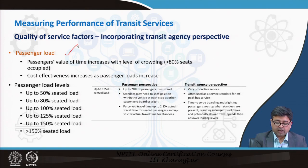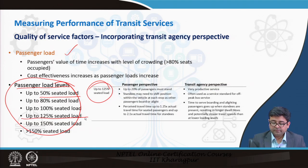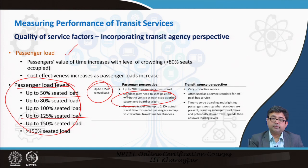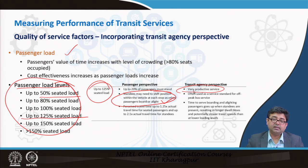Each of these services can be divided into levels. For passenger load, for example, up to 125 percent of the seats loaded means standees may need to shift position within the vehicle at each stop as other passengers board or alight. When the bus is running at over 100 percent occupancy — say 125 percent — people are not only standing but also having to shift positions as people move in and out. This gives an indication and a measure for how crowded the situation is — it may not be good for passengers, but such a service may be very productive for the transit agency.